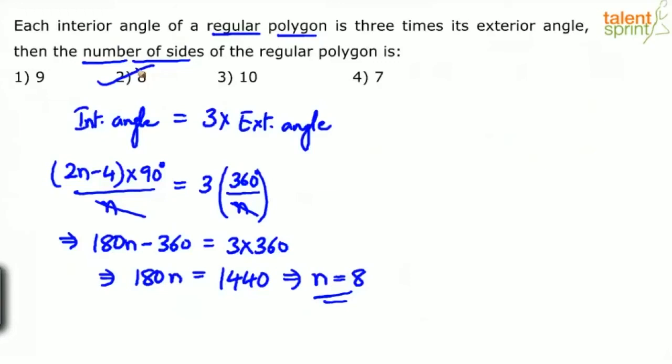This was a straightforward problem based on the formulas for interior and exterior angles of a regular polygon. Remember: interior angle = (2n − 4) × 90 / n, and exterior angle = 360 / n, where n is the number of sides.